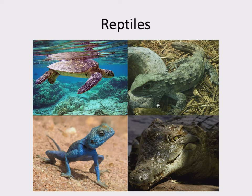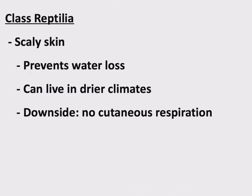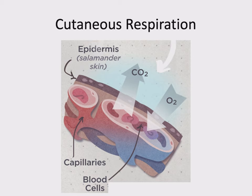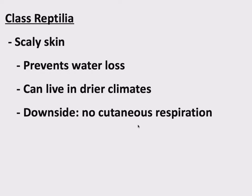What are some features of reptiles? We know alligators, crocodiles, turtles, and lizards. Reptiles have scaly skin, which prevents water loss. Alongside the amnion surrounding their embryo, this allows them to live in drier climates. The downside to tough, thick, scaly skin is you can't breathe through it anymore — cutaneous respiration is gone. Reptiles experience an upgrade in their circulatory system that makes them more efficient, so they can do without cutaneous respiration.